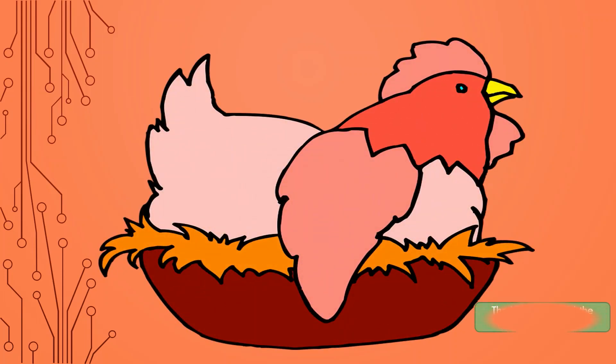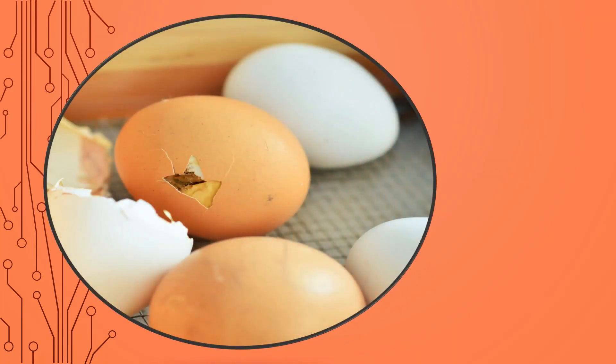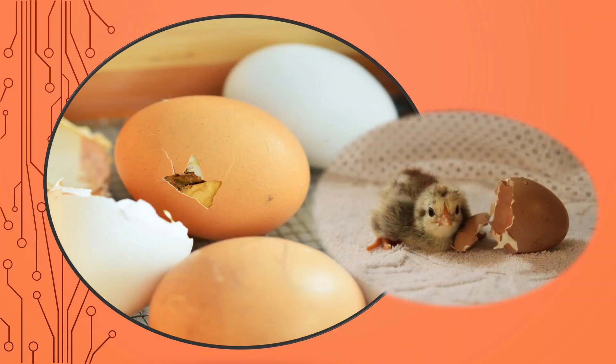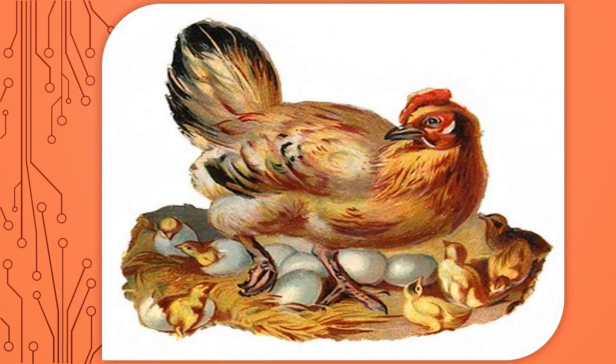The hen will brood the egg for 21 days. After 21 days, the eggs will slowly hatch and it will become hatchling. The mother hen will take care of the hatchlings. The hatchlings will grow slowly.